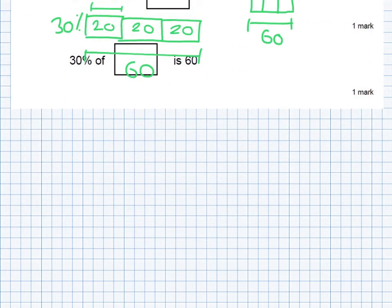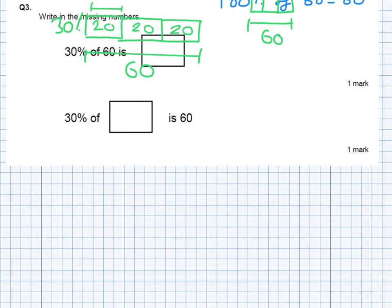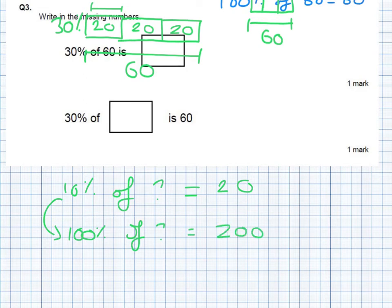Once I know 10% of my number, everything gets easier. So 10% of my number is 20. So if I know 10% of my number is 20, 100% of my number is 200 because I times them both by 10.